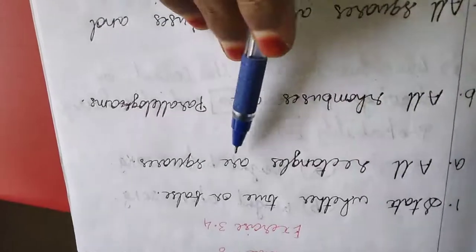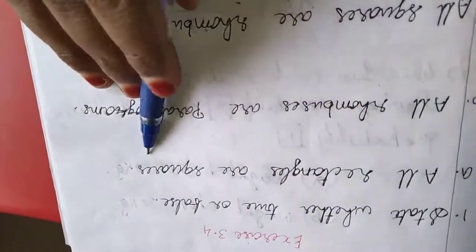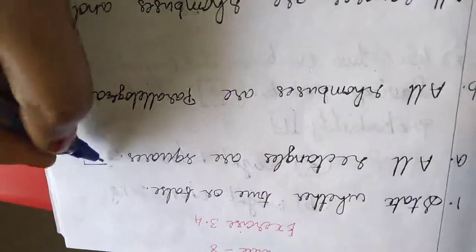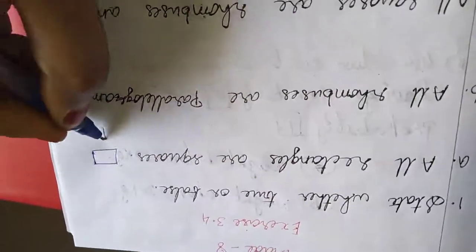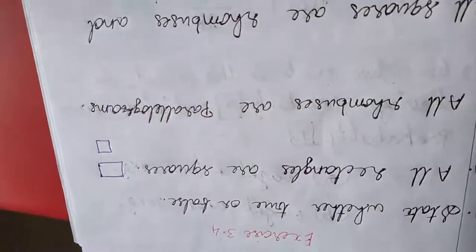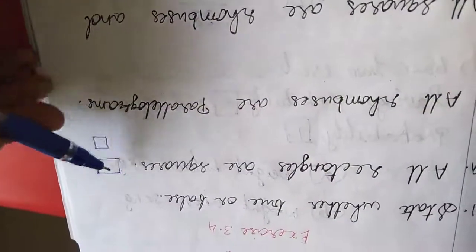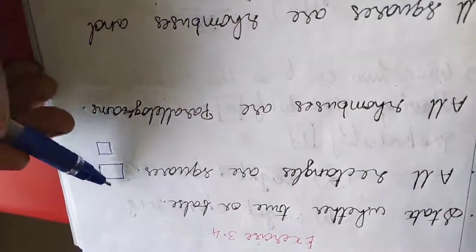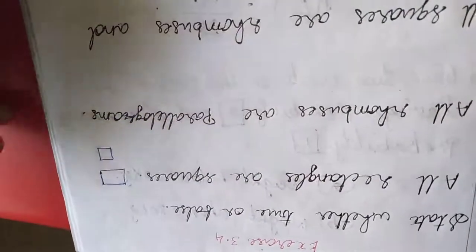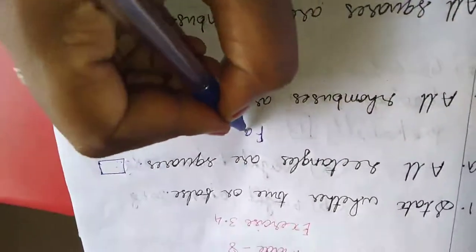All rectangles are squares. A square has four sides equal, but rectangles have only two sides equal, four sides are not all equal. So this is false.